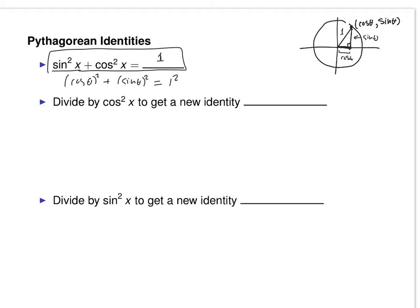That would be true even if you were in another quadrant — the cosine would be negative, but you would square it, which makes it positive. Just a thing to know: cosine² x means (cos x)², the whole thing squared. If I write cosine of x², that means cosine of (x times x). Do you see how those are actually going to be different things? That's the reason they chose this notation, because otherwise if you forget the parentheses, it's not clear what you mean.